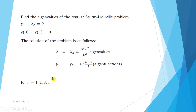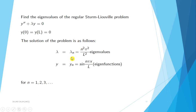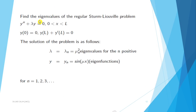The solution of this first example is: the eigenvalues are lambda n equals n squared pi squared divided by L squared, and the eigenfunctions are y n equals sin(n pi x / L), for n equals 1, 2, 3, and so on. So y1 corresponds to n equals 1, y2 to n equals 2, y3 to n equals 3, and so forth.